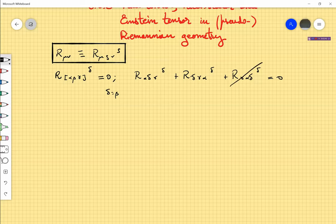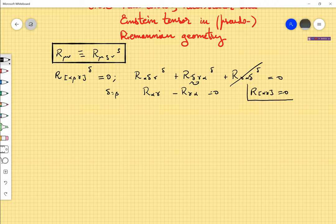This term vanishes automatically. And this term gives us R_αγ by definition. And this one, well, if I interchange these two indices, gives me minus R_γα, and this is equal to zero. So, the anti-symmetric part of the Ricci tensor is zero for the Levi-Civita connection. And it is a symmetric tensor.